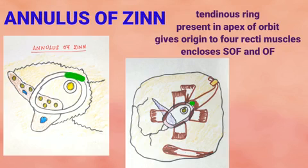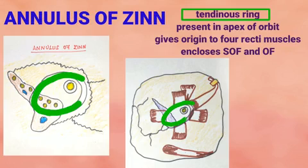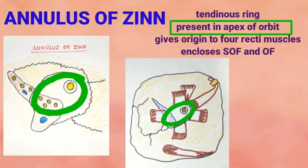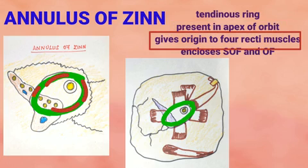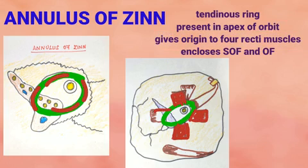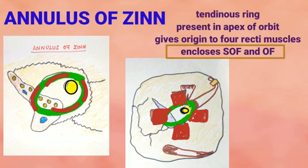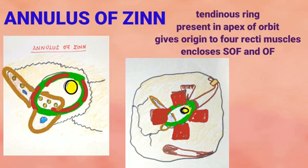The annulus of Zinn is a tendinous ring-shaped structure present at the apex of the orbit. It gives rise to the 4 recti muscles. It is oval in cross section and encircles the optic foramen, which transmits the optic nerve, and the medial part of the superior orbital fissure at the apex of the orbit.